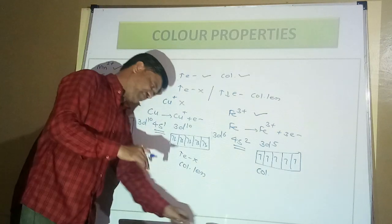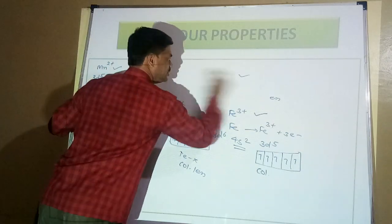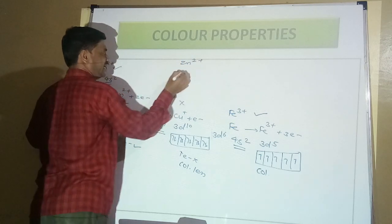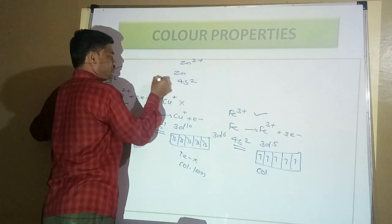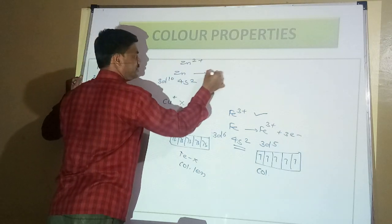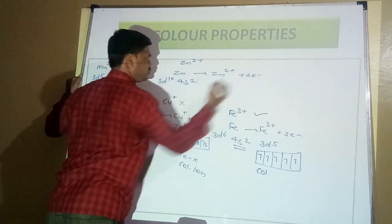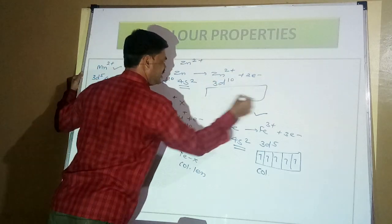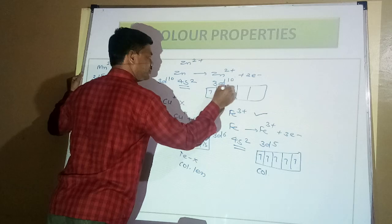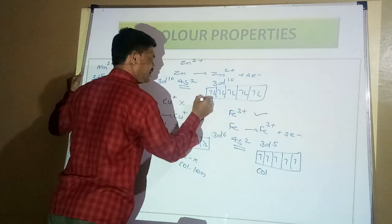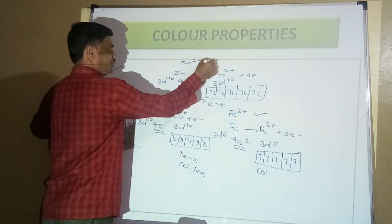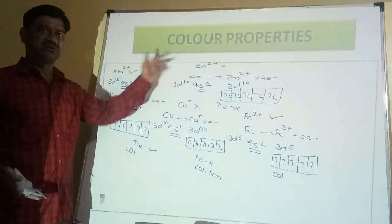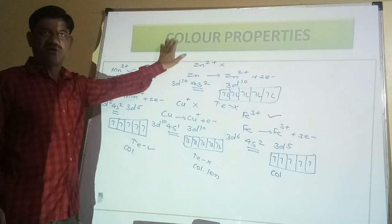Take Zn²⁺ (atomic number 30): Ar 4S² 3D¹⁰. To form Zn²⁺, 2 electrons are lost from 4S, leaving 3D¹⁰. In 3D¹⁰, there is an absence of unpaired electrons, so Zn²⁺ is found to be colourless. In MCQs, you may be given a cation or compound and asked to identify whether it is coloured or colourless.